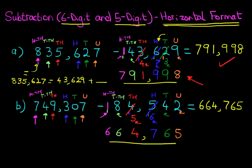Now again, that took quite a long time to work out. But with practice, you will get faster and faster at this, and you will also get more accurate. So that is how we subtract a 6-digit number and a 5-digit number using the horizontal format.